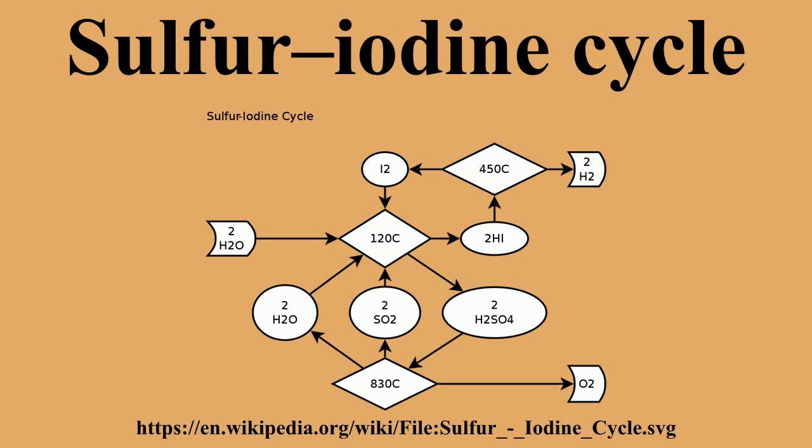The sulfur-iodine cycle is a three-step thermochemical cycle used to produce hydrogen. The SI cycle consists of three chemical reactions whose net reactant is water and whose net products are hydrogen and oxygen. All other chemicals are recycled. The SI process requires an efficient source of heat.